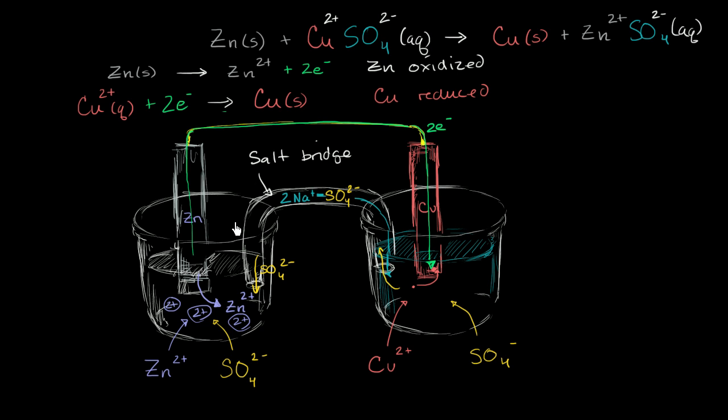Well, the negative terminal of a battery is where the electrons are coming from. So the electrons are coming from the zinc bar right over here. So this is the negative electrode of the battery, that right over there. Or the negative electrode is often called the anode. That is the anode of this battery.